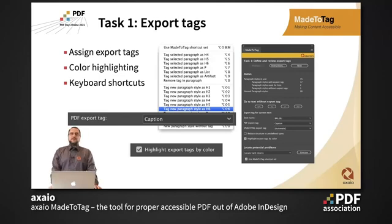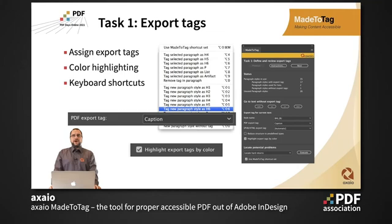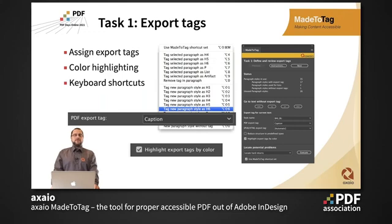The first task is to define and review the export tags. So you can assign them in InDesign, and you can use color highlighting to immediately see what is happening in the document — as soon as you select a paragraph as a heading, you will see the color change. We also add export tags not natively available in InDesign, like caption or block quote, so you can make use of them even though InDesign doesn't include them by default.